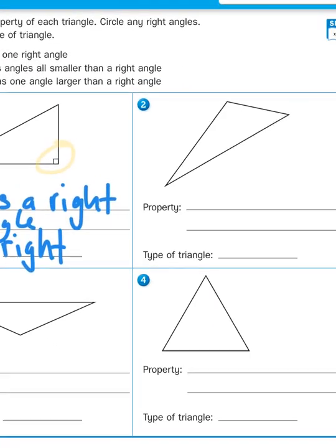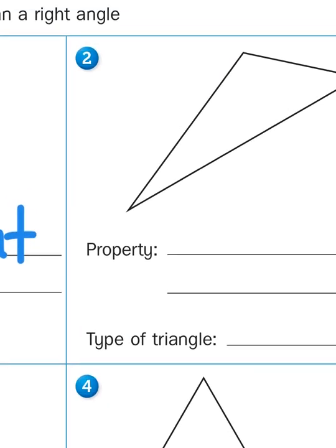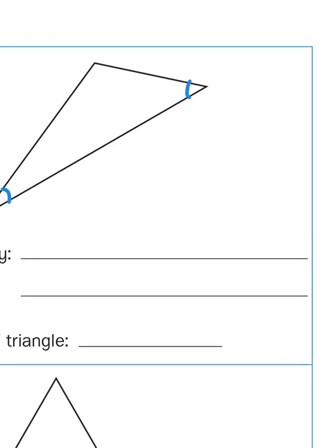But if I look at say number two, number two does not have a right angle first of all, so that eliminates that choice. If I look at some of the angles that it does have, this angle is very acute, as is this one.